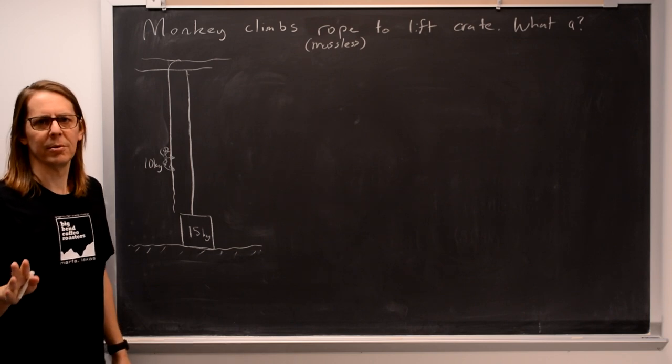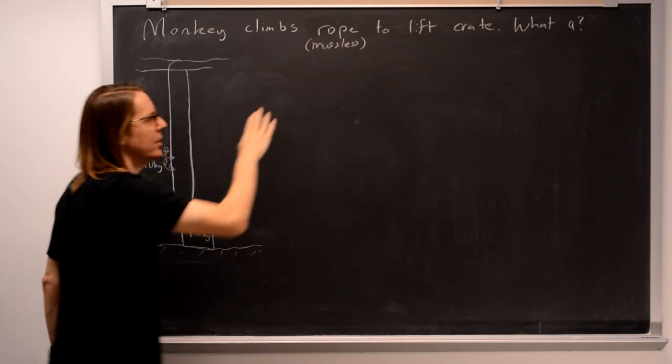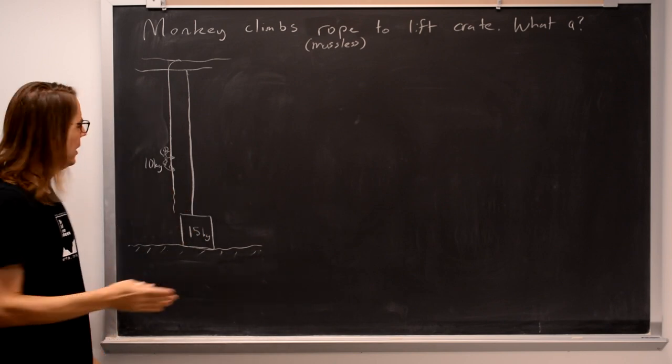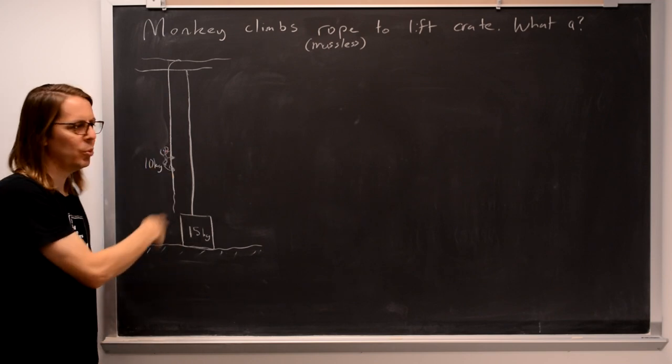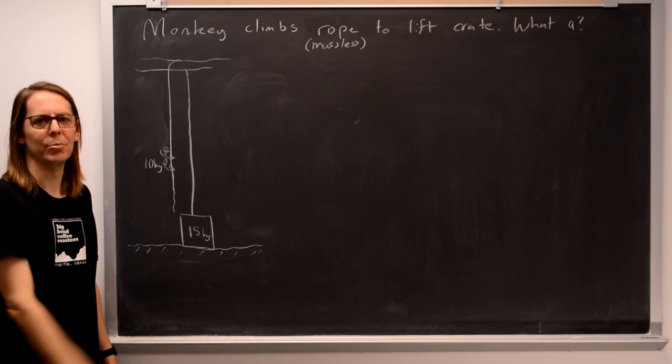Two important points about this problem to get started: one is to keep in mind that this rope, as in most of the ropes and the problems we work on, is massless. So as the monkey accelerates up, he's going to have to pull rope below him. So the weight of the rope below him does not add to his weight. We don't have to consider it as a mass.